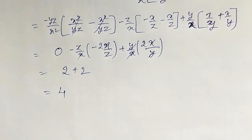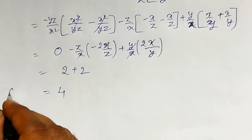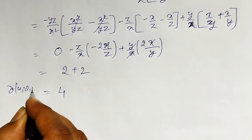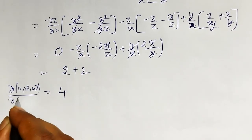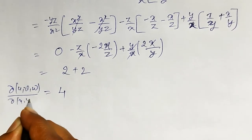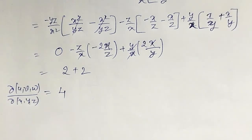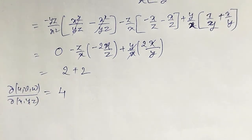While solving the determinant you should be careful like this. Therefore, the Jacobian of u, v, w with respect to x, y, z equals 4.